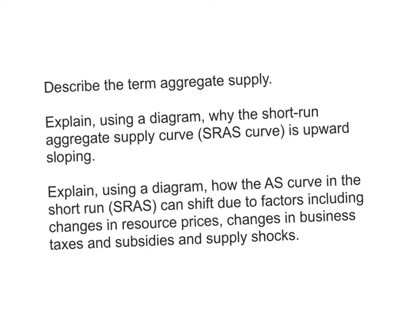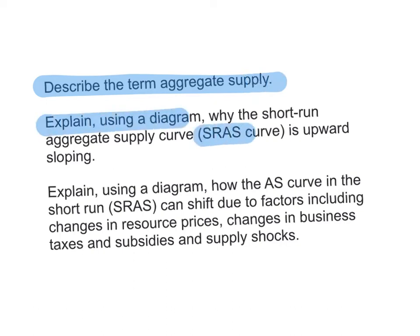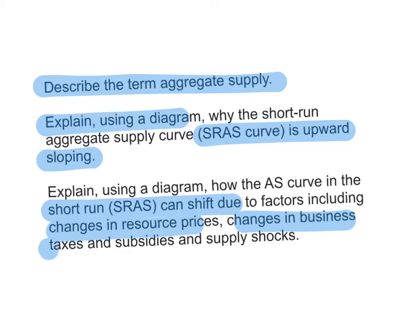What are the learning outcomes for this video? First, we're going to describe the term aggregate supply. We're going to explain using a diagram why the SRAS curve is upward sloping, and explain using a diagram how the SRAS curve in the short run can shift due to factors including changes in resource prices, changes in business taxes and subsidies, as well as supply shocks.